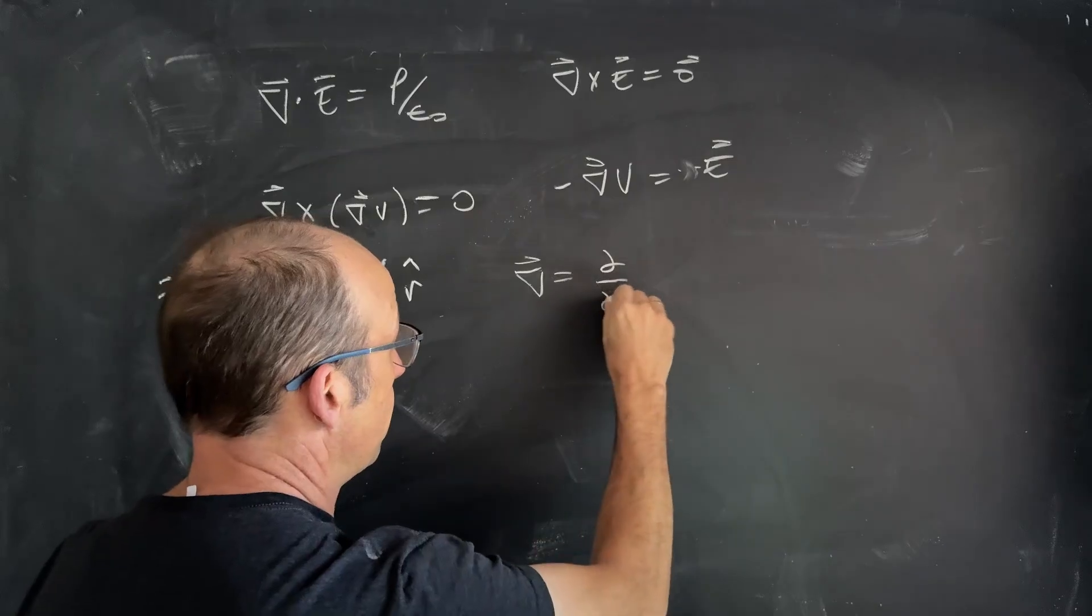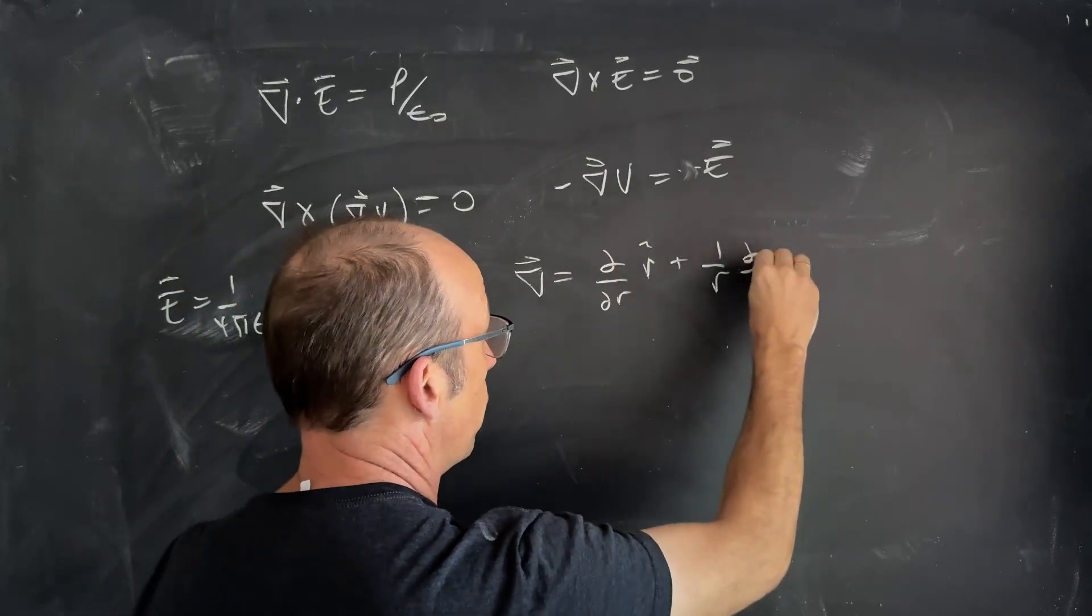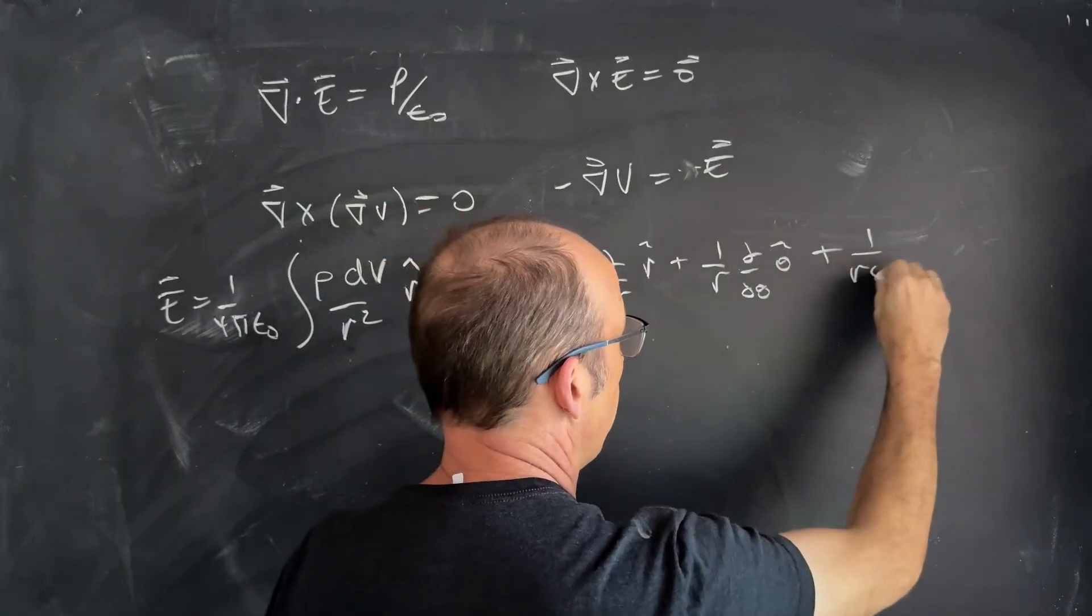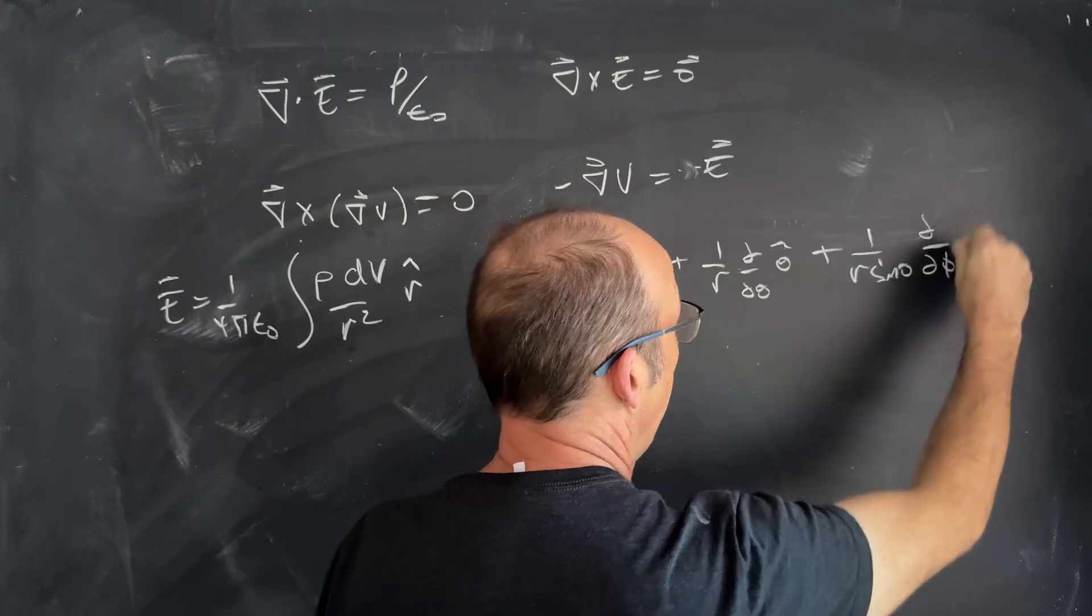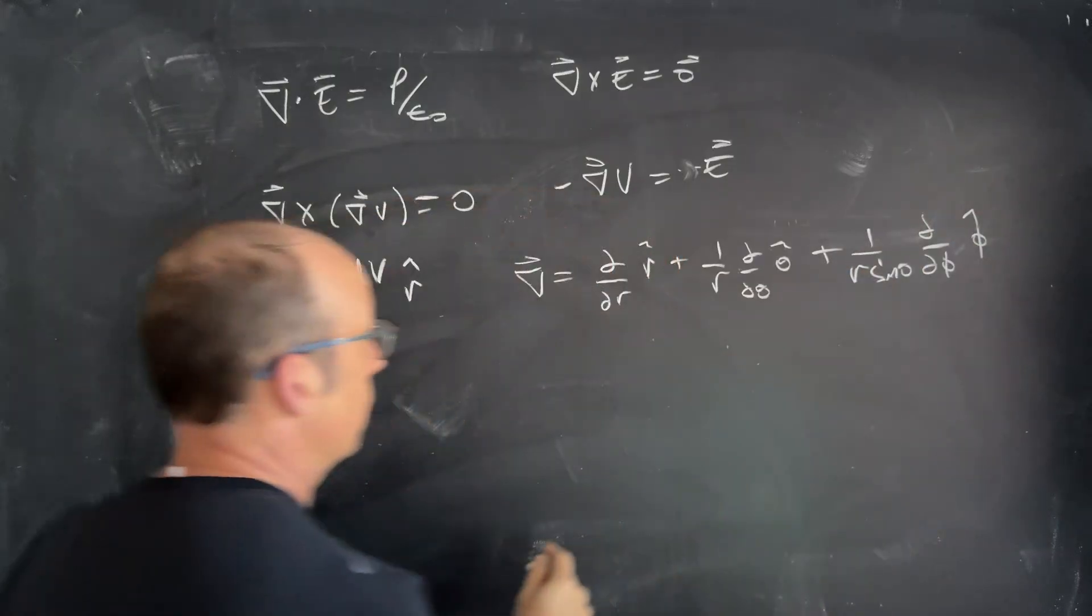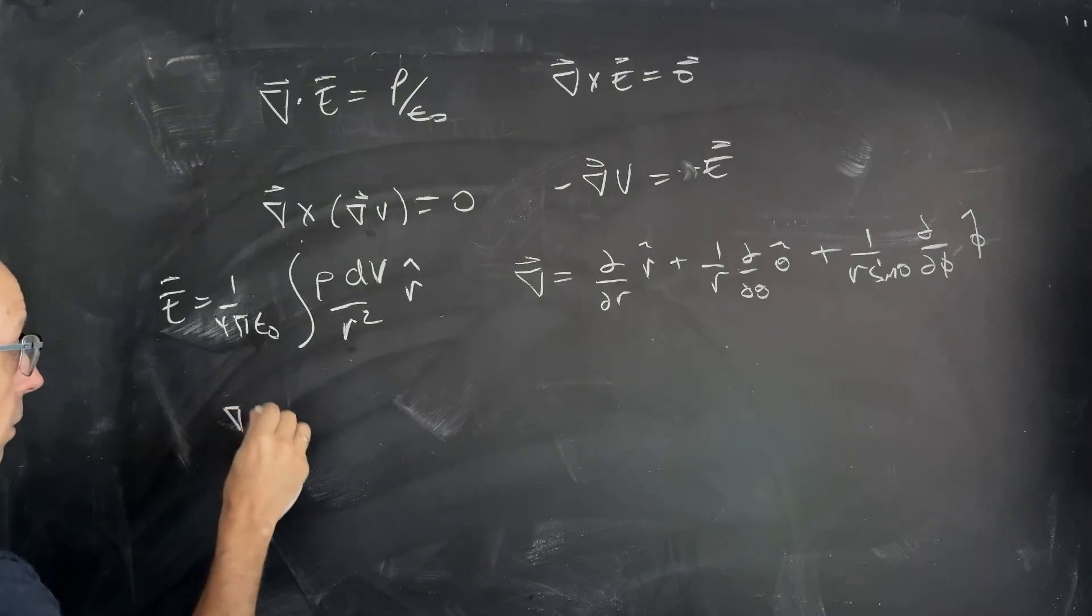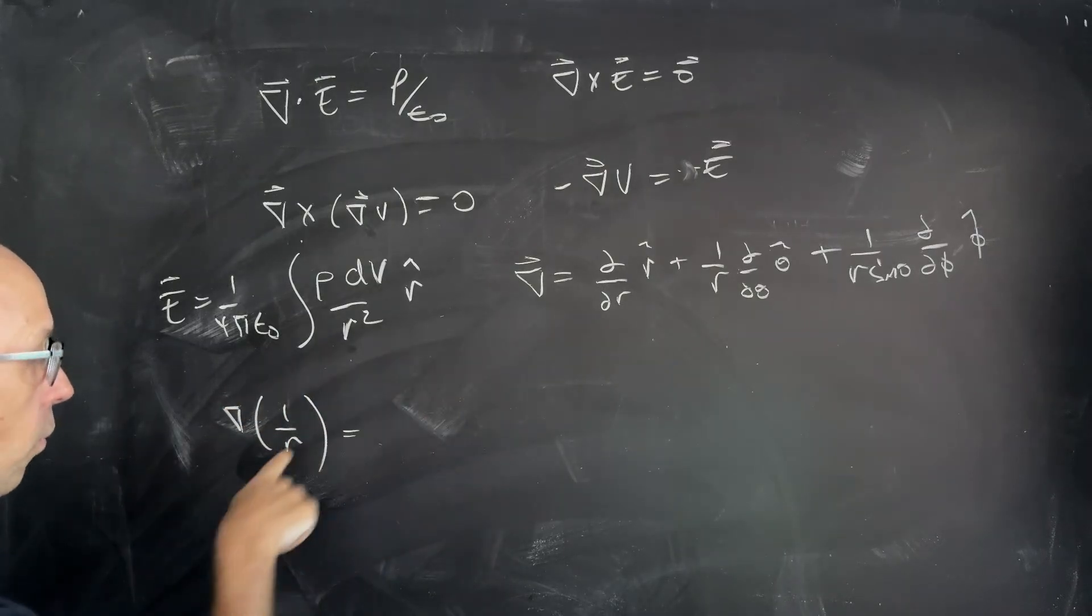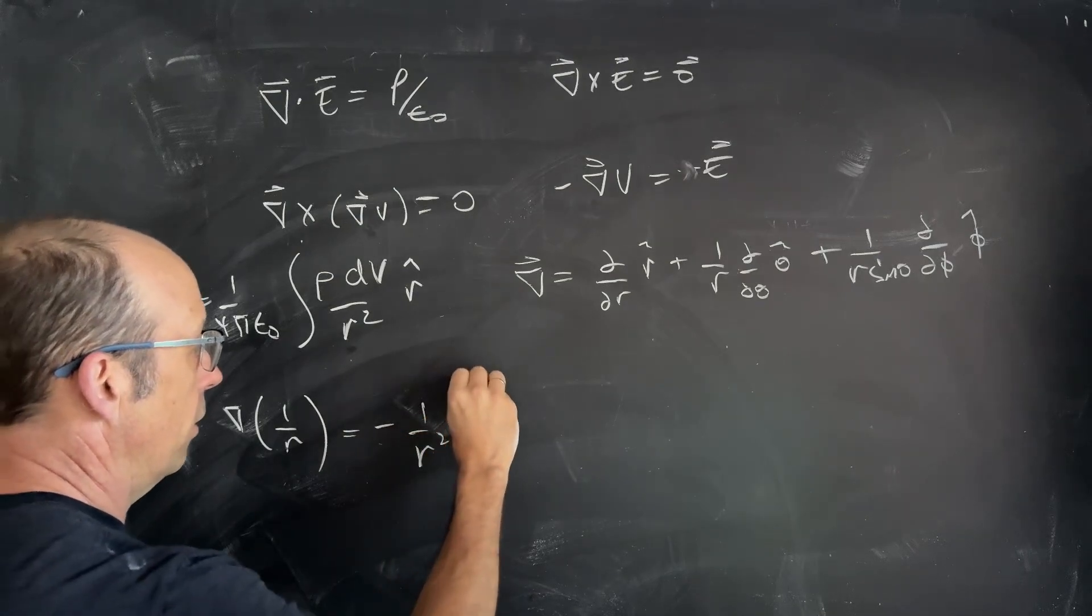So, I can write the Del operator in spherical coordinates. It's partial with respect to R, R hat, plus one over R, the partial with respect to theta, theta hat, plus one over R sine theta, the partial with respect to phi, phi hat. So, let's just say, what if I take Del of one over R? I get, well, I'm going to take the derivative of this. I get negative one over R squared R hat.